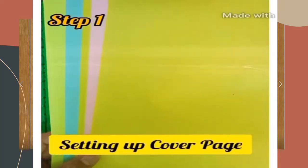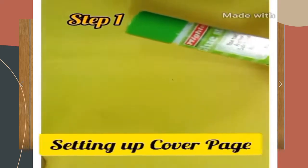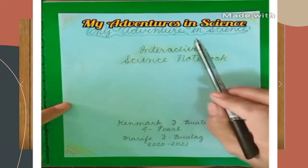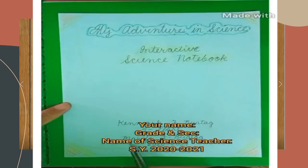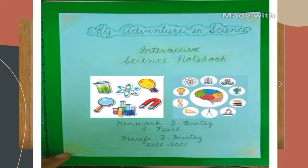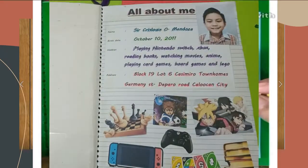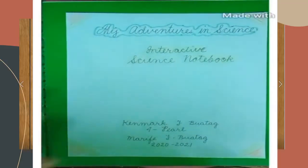In setting up your cover page, you can use light colored paper, crayon, glue, and ball pen. Write 'My Adventures in Science,' Interactive Science Notebook, your name, your grade and section, the name of your science teacher, and 2021-2022. Add at least two pictures that remind you about science. You can also use crayon to make it more attractive. You can freely show your creativity. Or if you have a computer and printer, you can use them to design your cover page. Glue it in front of your notebook and cover it with plastic.